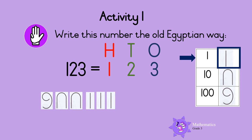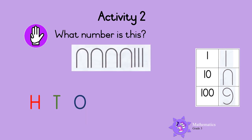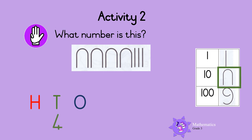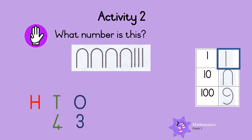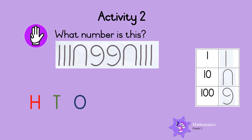Activity 2. What number is this? This is the symbol for tens and there are one, two, three, four of these symbols. This means there are four tens. And there are two, three ones, meaning there are three ones. So the number is 43. Great!